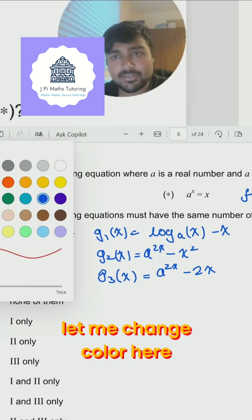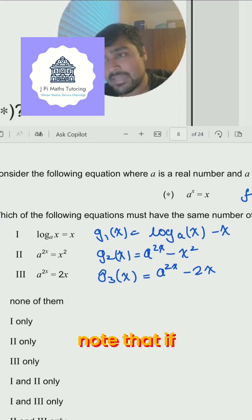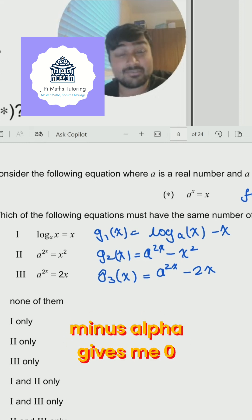Let me change color here. So note that if f of alpha is 0, then g3 of alpha over 2 is 0. So this basically means if I have some number alpha that when I plug into this, a to the alpha minus alpha gives me 0.